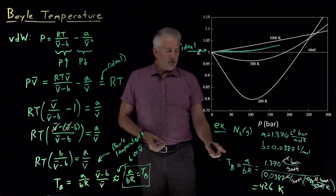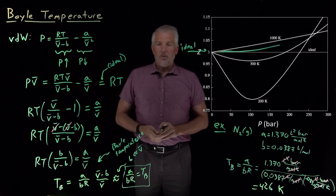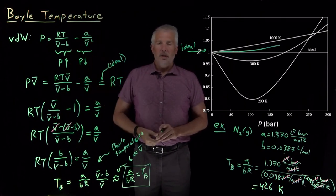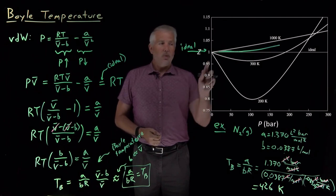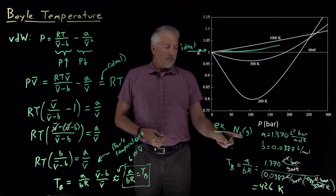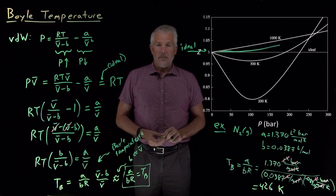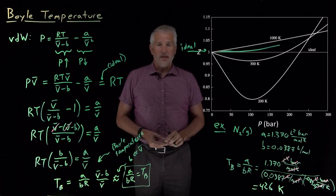Is to describe the temperature where, because of this coincidental cancellation between attractive and repulsive effects, the pressure can be predicted pretty well by the ideal gas law. So nitrogen gas, normally we would say the ideal gas law applies best at high temperatures, but coincidentally it applies extremely well at this temperature of 426 Kelvin, specifically at the Boyle temperature.